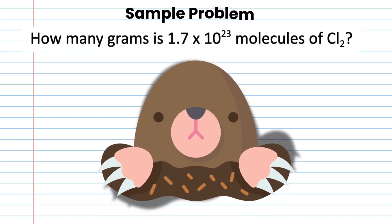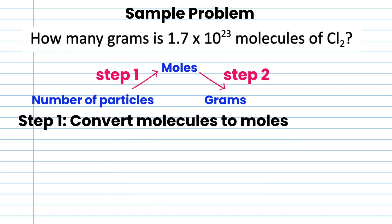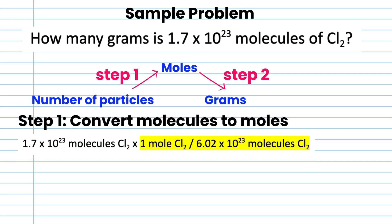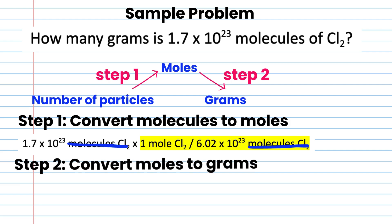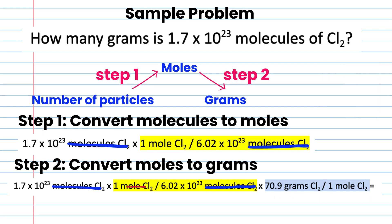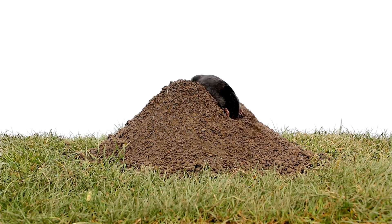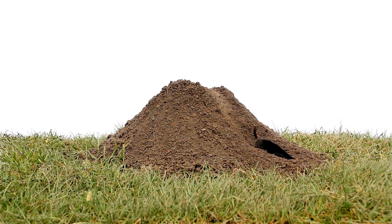Conversion from number of particles to grams. Sample problem: how many grams is 1.7 times 10 to the 23 molecules of Cl₂? Step 1: convert molecules to moles — 1.7 times 10 to the 23 molecules of Cl₂ times one mole Cl₂ over 6.02 times 10 to the 23 molecules of Cl₂; cross out the molecules to get moles. Step 2: convert moles to grams using 70.9 grams Cl₂ per one mole of Cl₂; cross out the moles. Final answer: 20.02 grams of Cl₂.